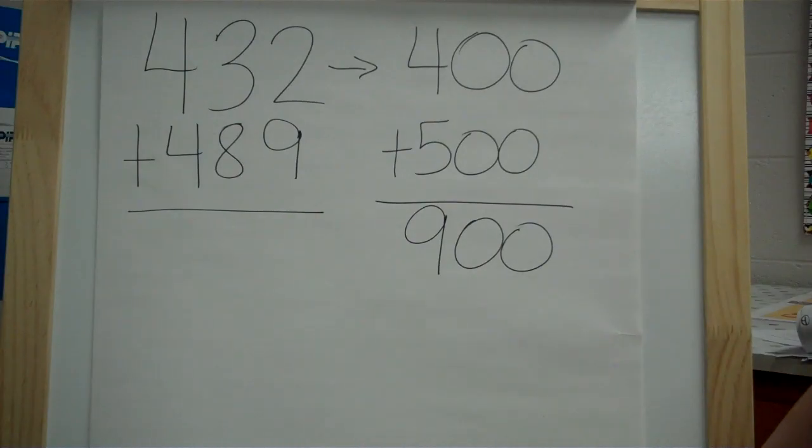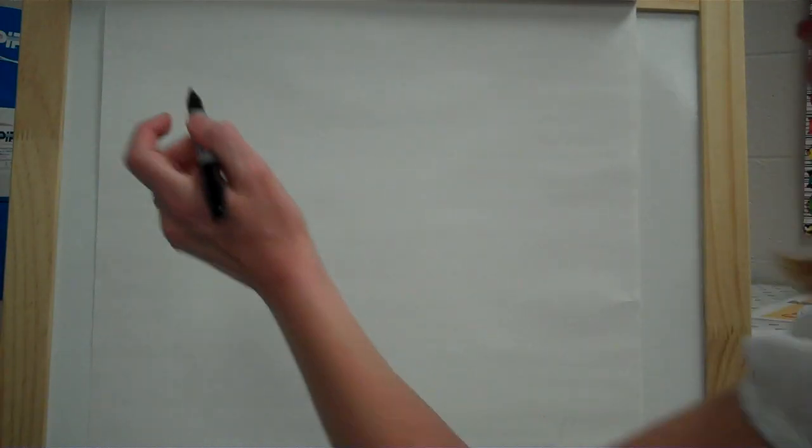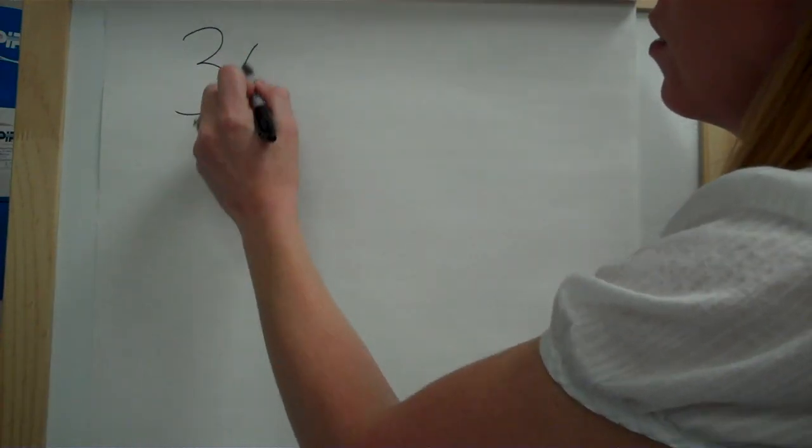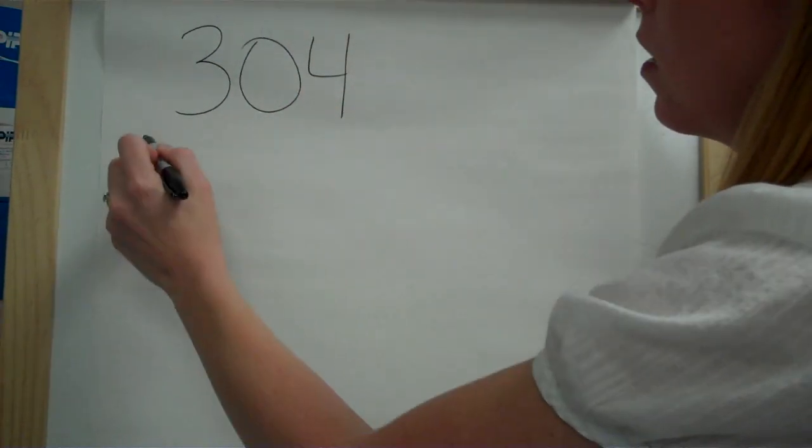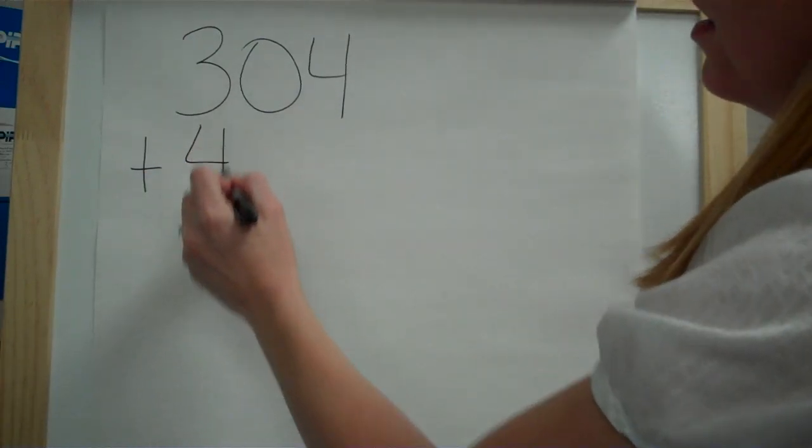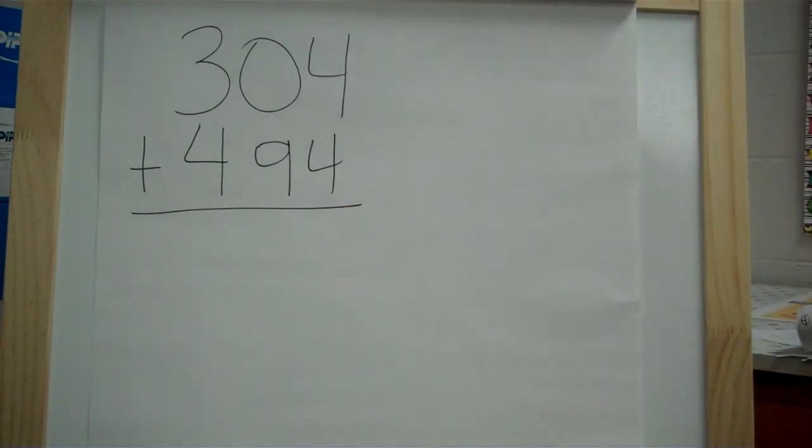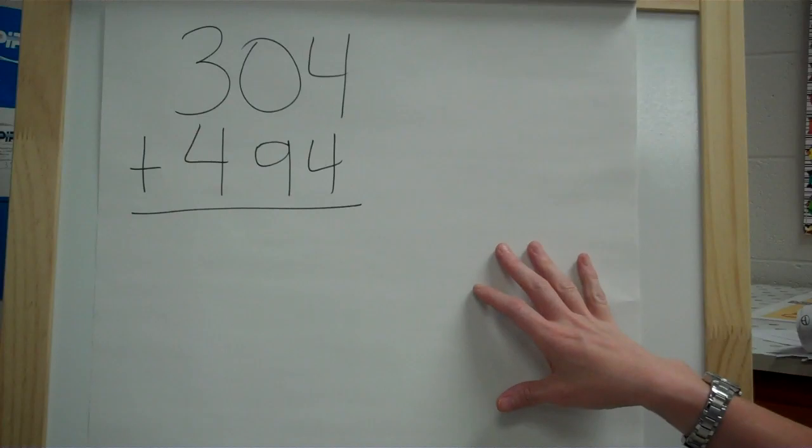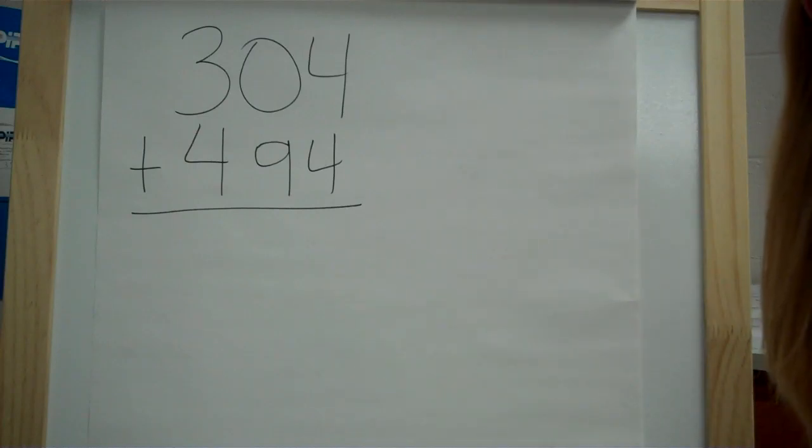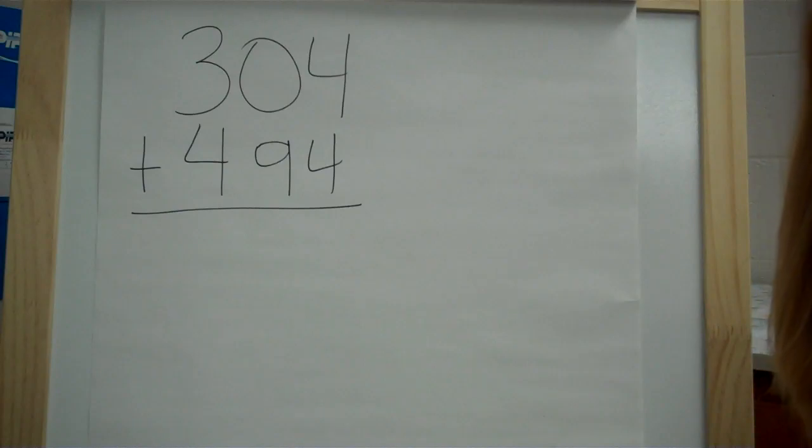Okay, let's try another one. All right, let's do 304 plus 494. All right, so I'm going to have you pause it here so that you can round these to the nearest hundred and then estimate that sum, and then we'll work it together. So press pause. When you're finished, press play, and we'll work it out.